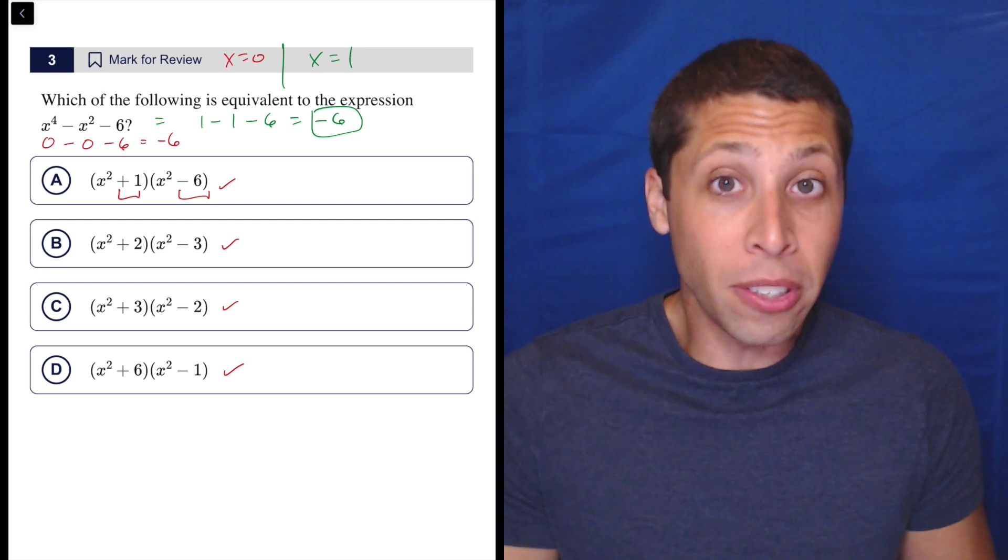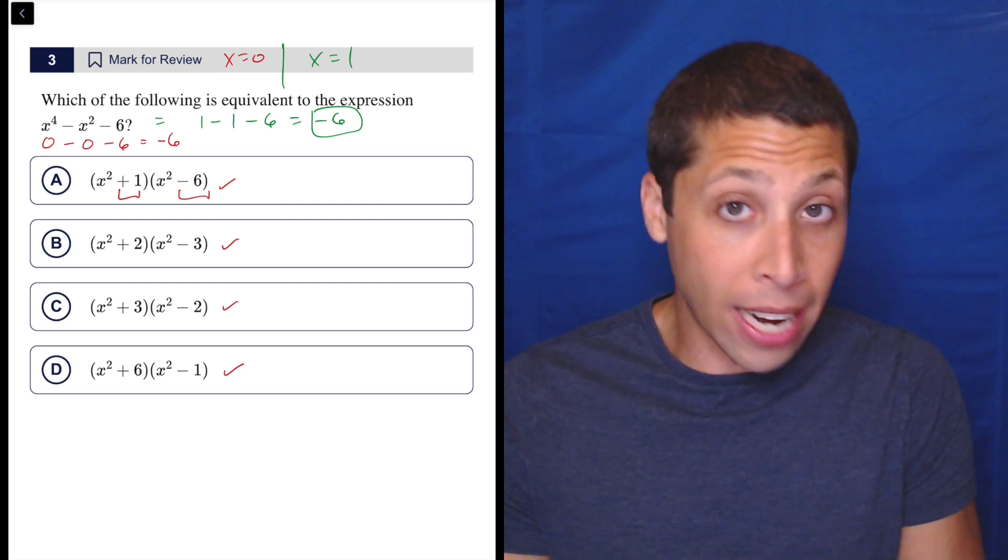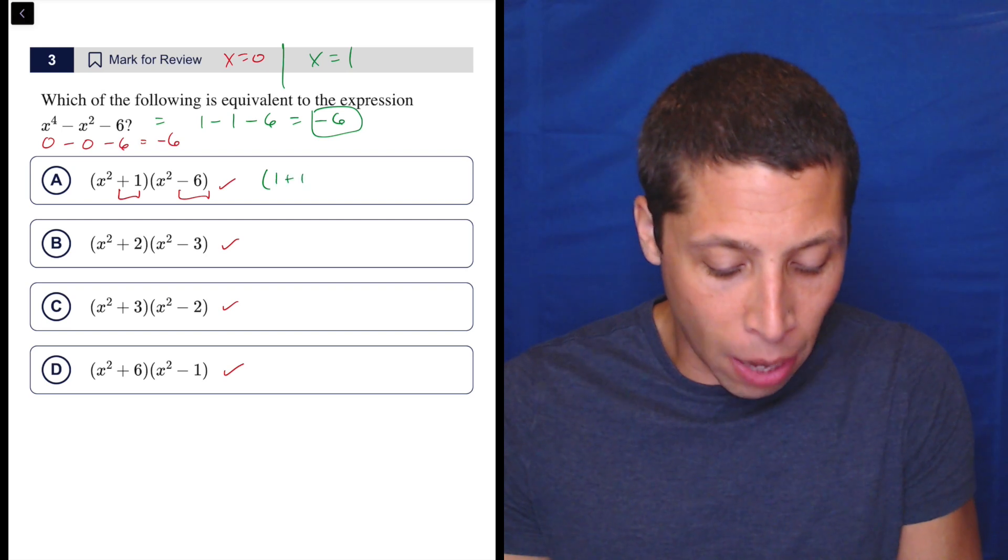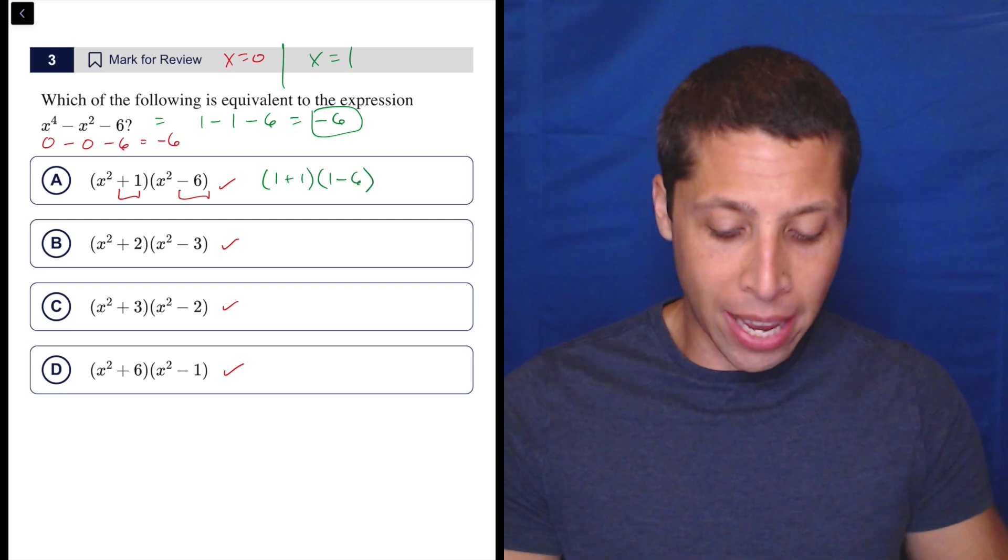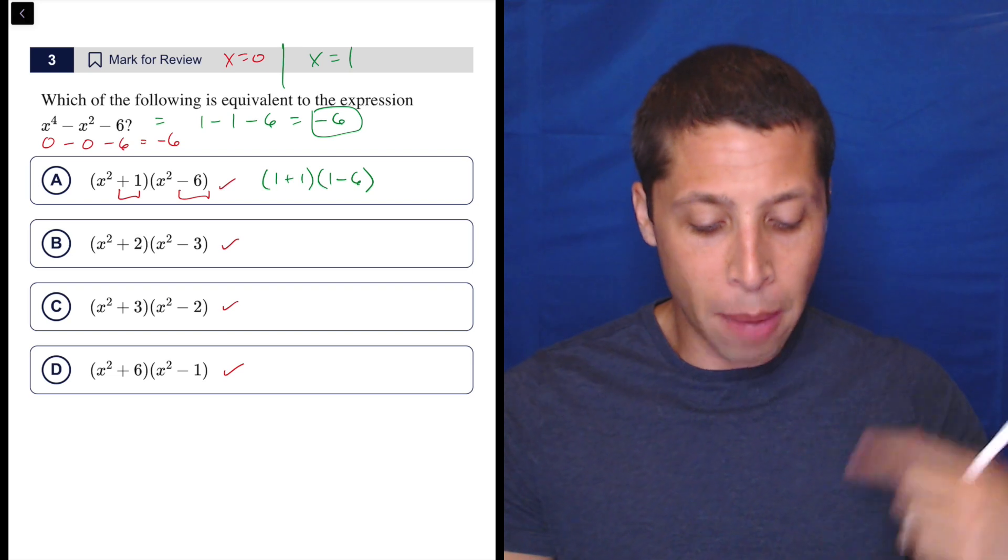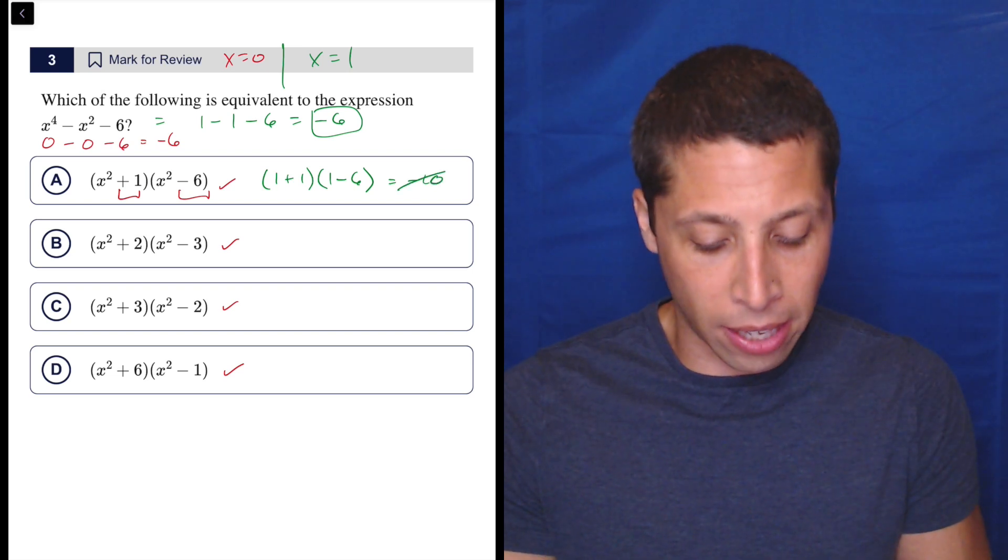So our number is the same, but now when we plug into the choices, we're going to plug in a one. And again, I can do this in my head, but I want to show you why this works so well. If I'm doing this in my head, I see, okay, that's two times negative five. That's negative ten. So that doesn't work. I need it to be negative six. So this one is going to be three times negative two. That's negative six.